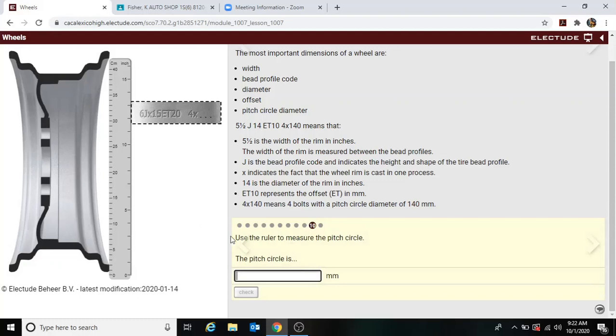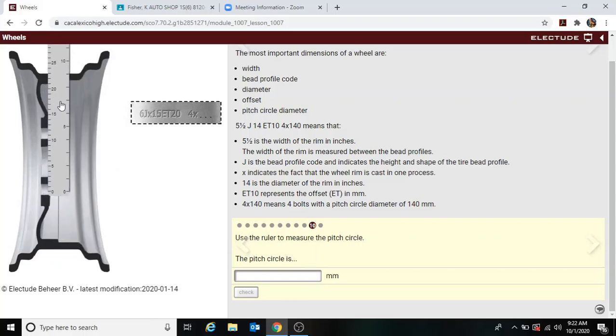Okay, so now we're going to measure the pitch circle and it's looking for millimeters again, but all we have is centimeter and inch, so let's do it in centimeters. What you're going to do is try to put the zero right in the middle of one of the lug nut holes right here and you come up and you see 11 centimeters right in the middle of the other lug nut hole. But it's asking for millimeters, so remember 10 millimeters per centimeter, so 11 would be 110.